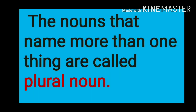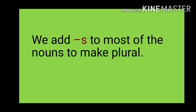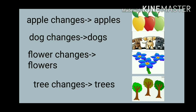Now the second kind of noun. The nouns that name more than one thing are called plural nouns, and they are more than one. Let's see some examples. We add S to make most nouns plural. Apple changes to apples, dog changes to dogs, flower changes to flowers, tree changes to trees. These all are examples of nouns where we add S.